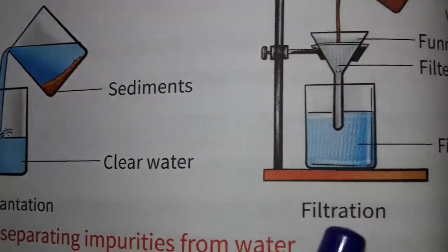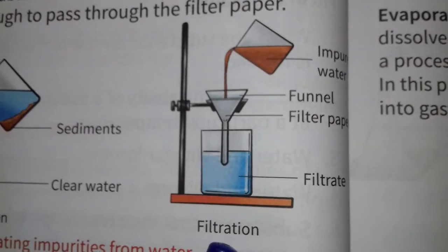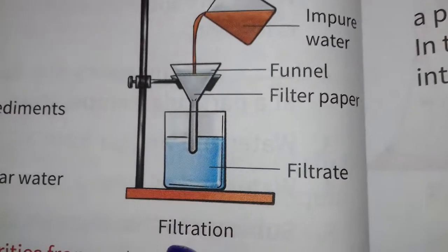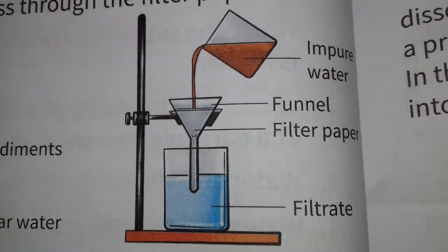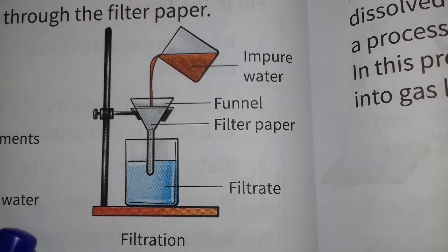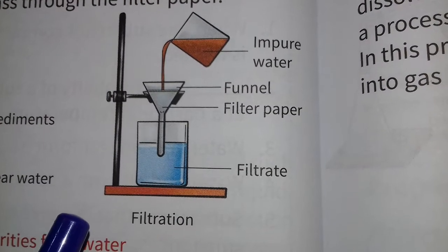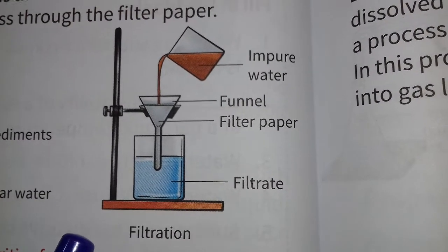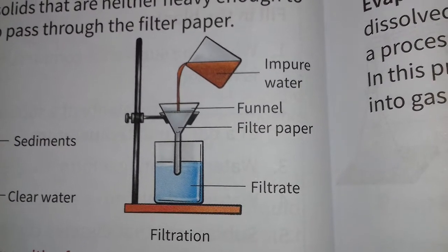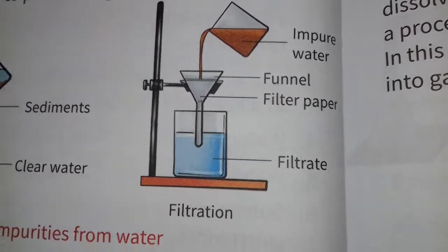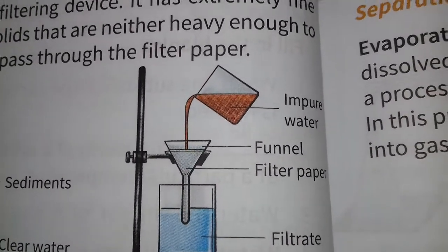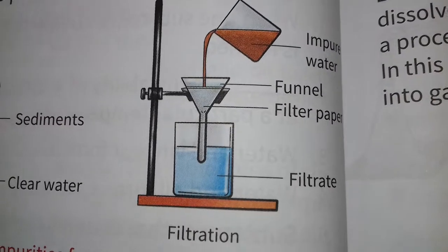Now it is filtration. Tea is filtered before drinking. This is done using a strainer. When we strain the tea, the liquid part passes through while the tea leaves are left behind on the strainer. The liquid passes through into a cup or container and then we drink it.